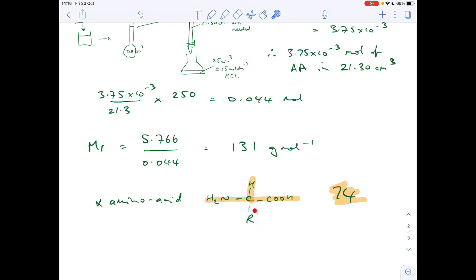We've just got to work out what the Mr of the R group is and then we can work out what the amino acid was. So the essential part of the alpha amino acid has an Mr of 74, so if we subtract 74 from the 131, so 131 minus 74, we can find out that the Mr of the R group is 57.